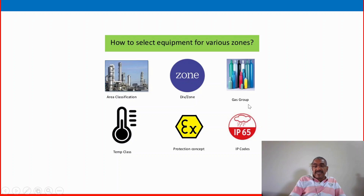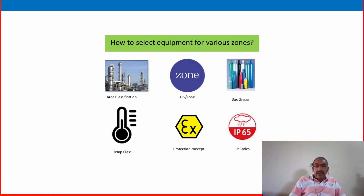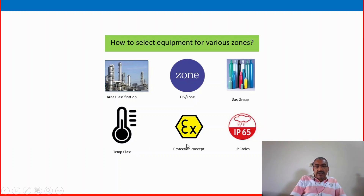Gas group: the various gases used in that area — such as methane, ethane, acetylene, hydrogen, nitrogen or chlorine — also support the selection of various equipment in that zone. Temperature class indicates whether it is a high temperature zone. Protection concept covers what type of protection concept is used and the various available international practice codes.